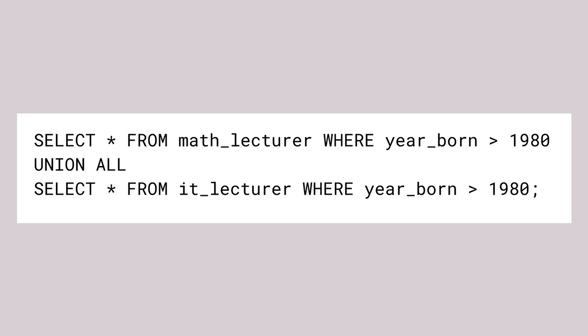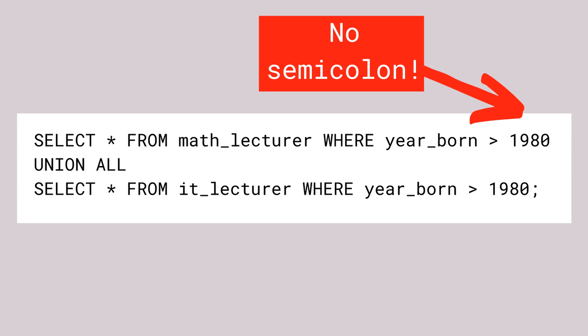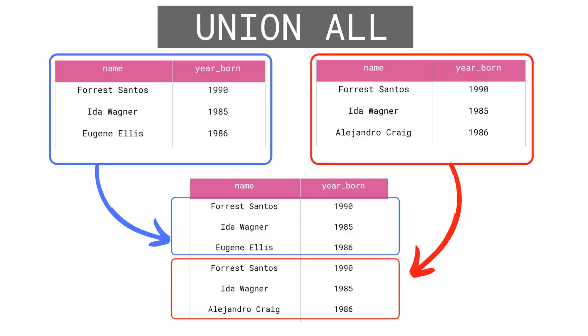Now, because these result sets have the same number of columns and the same column types, we can merge them into a single result set. That's where union all comes in handy. We wrote the first query without a semicolon at the end, then we put the keywords union all, and finally we wrote the second query and added a semicolon at the very end. We'll see rows from the first query and rows from the second query combined into a single result set. There's no need to run two very similar queries when we use union all.